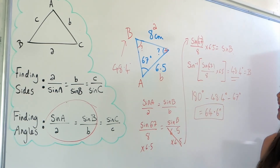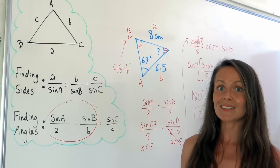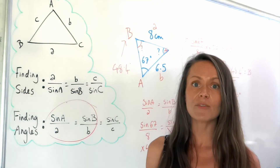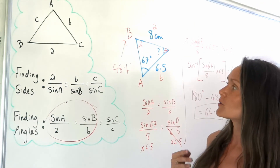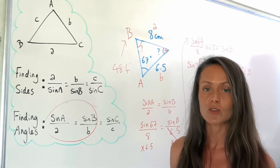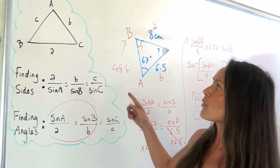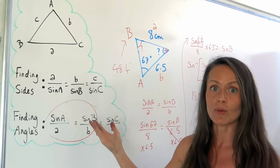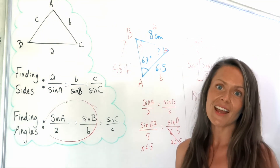So there's finding angles using the sine rule. I hope that makes sense. I'll have another video on the cosine rule, which covers finding angles and sides in non-right-angled triangles using three sides and an angle instead of these pairs we've been using today.